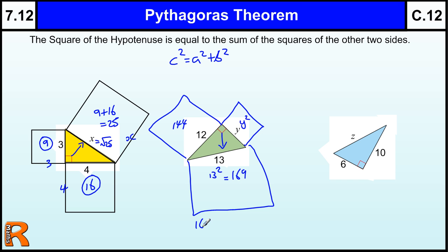So this one, the big one, 169, is equal to 144, plus y squared. So we know y squared is going to be 169, take away 144, which should be 25, and therefore y is the square root of 25, which is 5, just like it should have been this one, I didn't actually write the answer there, which is 5.